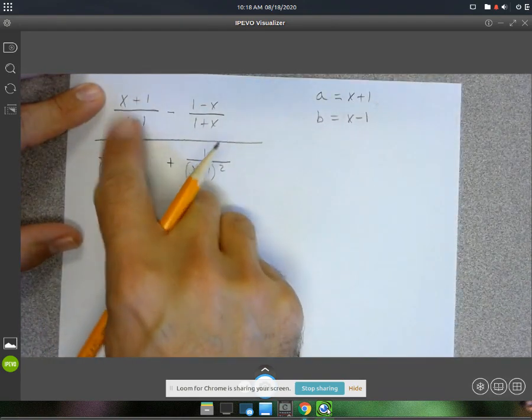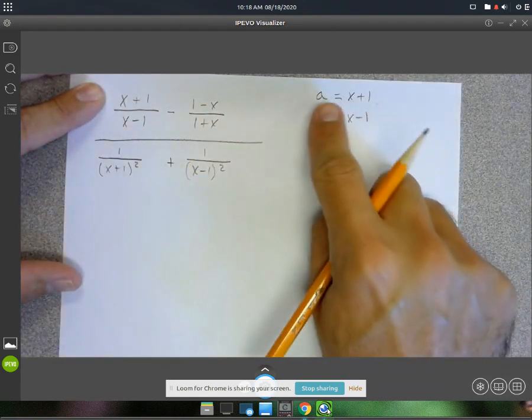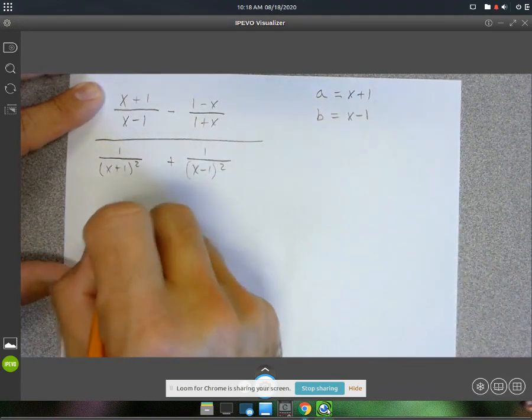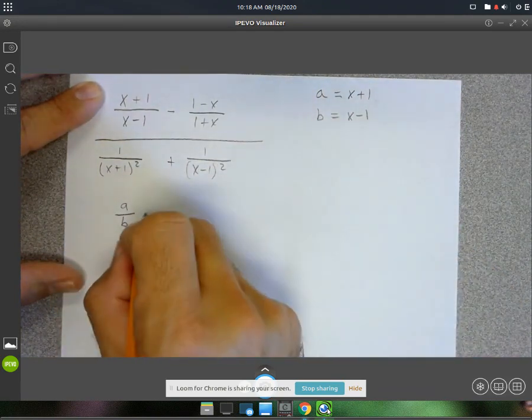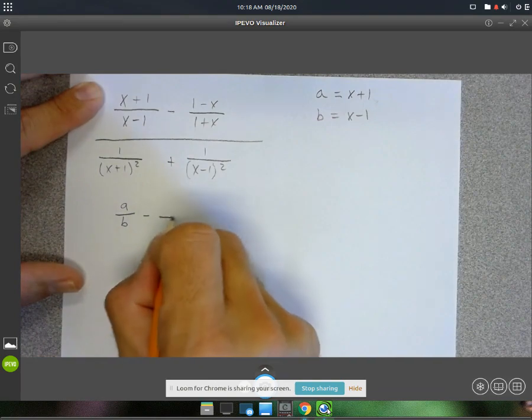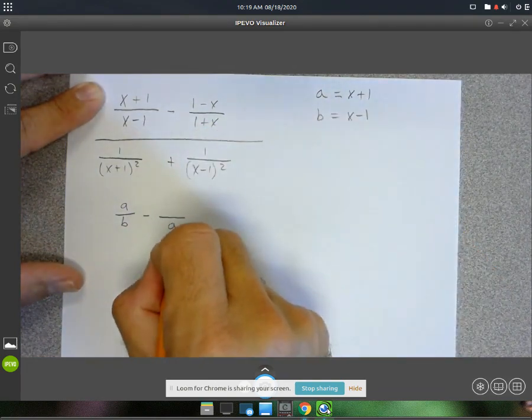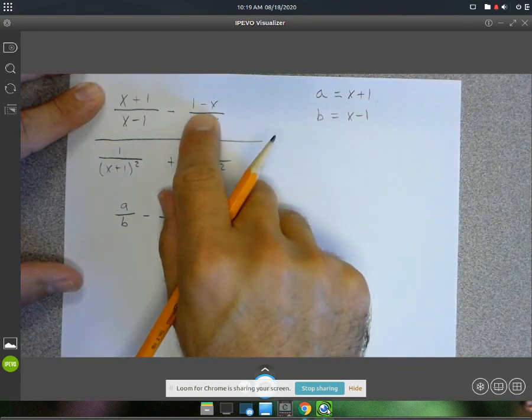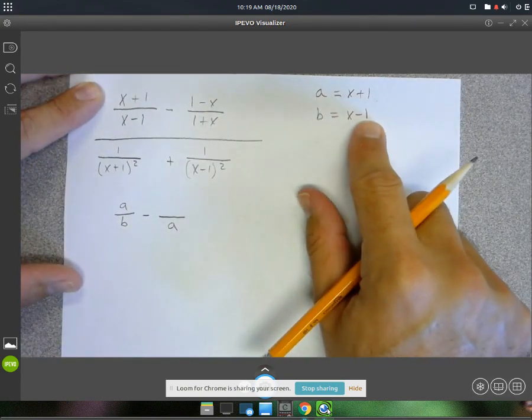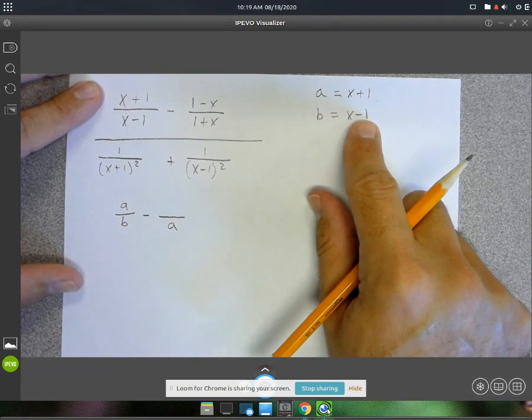So I've got x plus 1 over x minus 1. So that's going to be a over b. A over b minus, this is x plus 1 in the denominator. So that's an a. Now, this is 1 minus x, which is really close to the same thing here. It's actually just the negative of this.